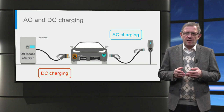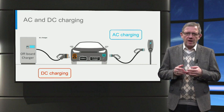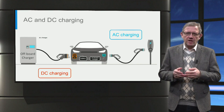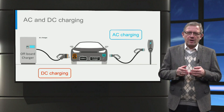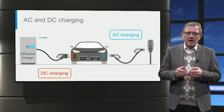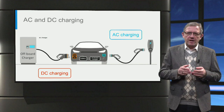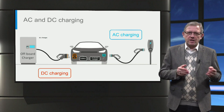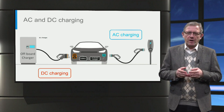While Tesla cars use the same vehicle inlet for both AC and DC charging, all other manufacturers have separate vehicle inlets for AC and DC charging, as shown in the picture.